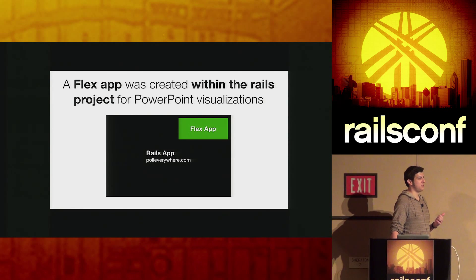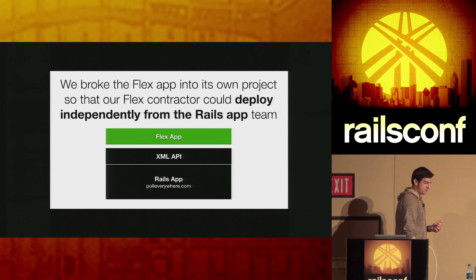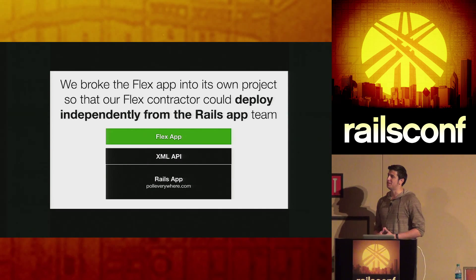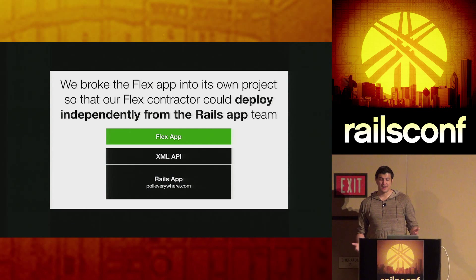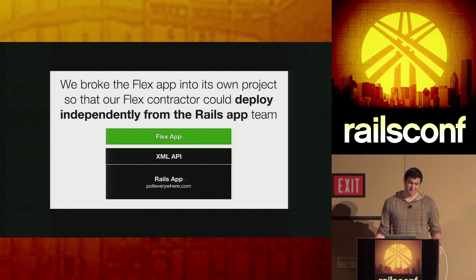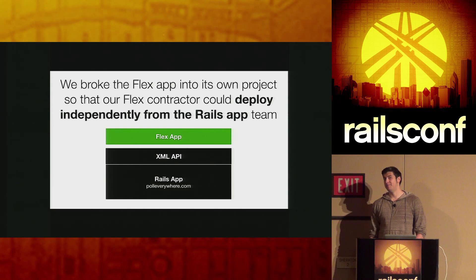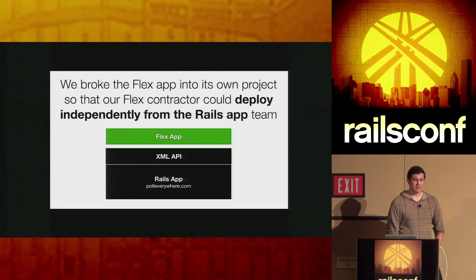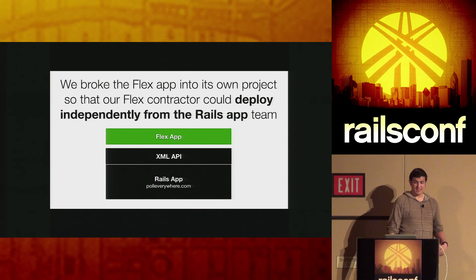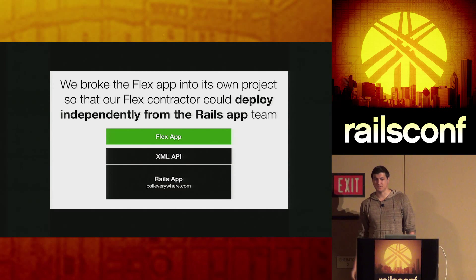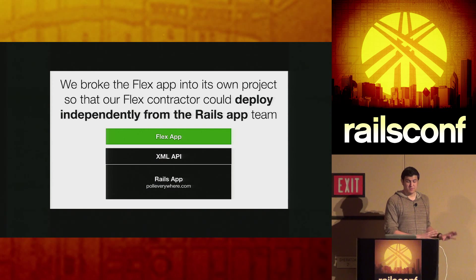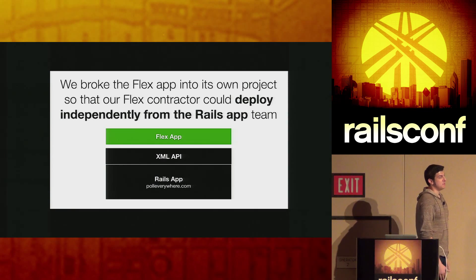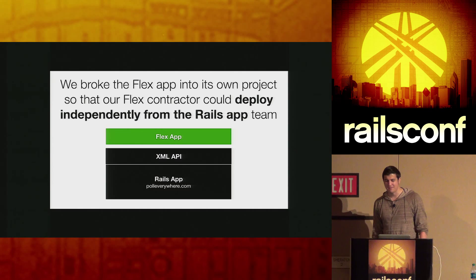We initially had this Flex application in the same code repository as our Rails application. As we built more customers and things became more complex, we brought in a contractor who started making a lot of progress on the Flex app — to the point where we got annoyed at how many commits he had in our SVN repository. So we broke it out into a separate application with separate deployments. The contractor could deploy SWF assets to production while the Rails team pushed updates through a separate release cycle. At the time it was also easier for Flex to work with XML, so we had a very fashionable XML API.